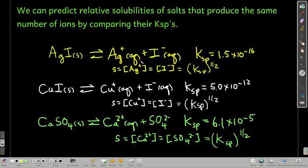So because they all break apart into two ions, the same number of ions as each other, we can just look at the KSPs and say that silver iodide has the smallest KSP, so is the least soluble. Calcium sulfate has the largest KSP, and so is the most soluble. And copper I iodide is right in the middle.